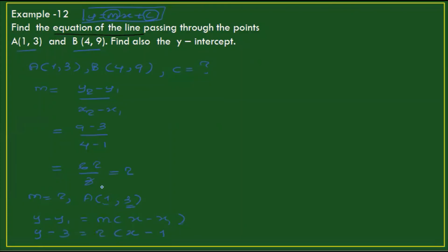Using the point (1, 3) with x1 equals 1 and y1 equals 1. Applying the point-slope formula: y minus 3 equals 2 times x minus 1, so y minus 3 plus 3 gives y equals 2x minus 2 plus 3. Therefore y equals 2x plus 1.